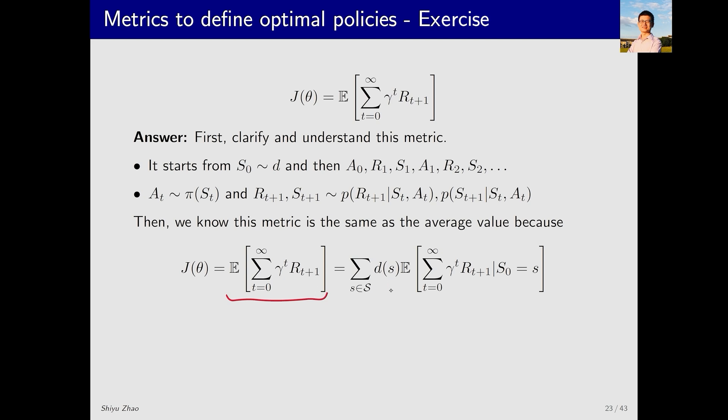And the value for this state is given by this expression. Adding these values together gives us the following equation. So, what is this expression? Can you recognize it? This is actually the total discounted return obtained starting from state s. Because it's essentially the discounted return, this equals g_t, and this in turn equals v_π(s). Therefore, the whole equation simplifies to Σ d_π(s)v_π(s), which equals v̄_π. As I mentioned, it is actually quite straightforward.